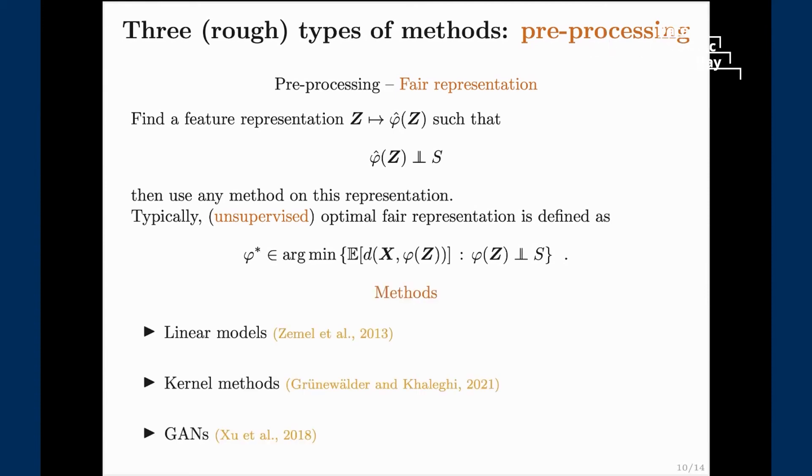There are a bunch of ways to achieve it. It can be linear models when you're trying to decorrelate. Once you're able to solve it with linear models you can use kernel tricks and go to kernel methods. It can also be based on adversarial networks where we add one neural net which tries to predict the sensitive attribute based on the representation that we are constructing.